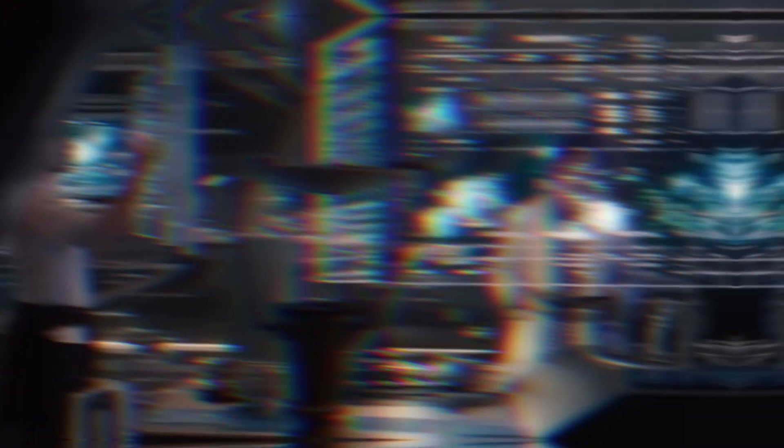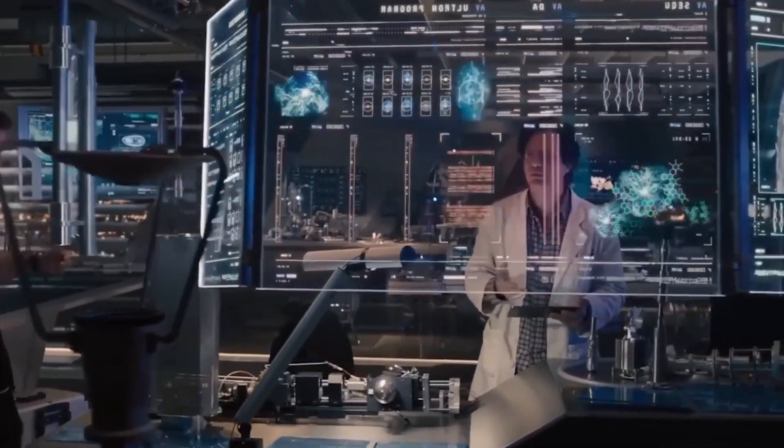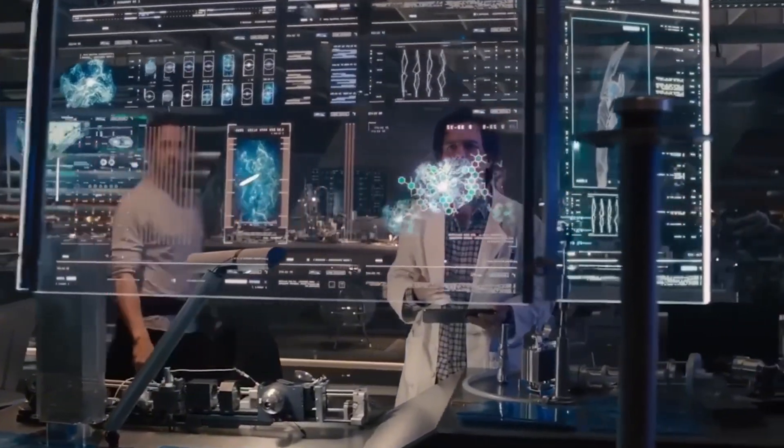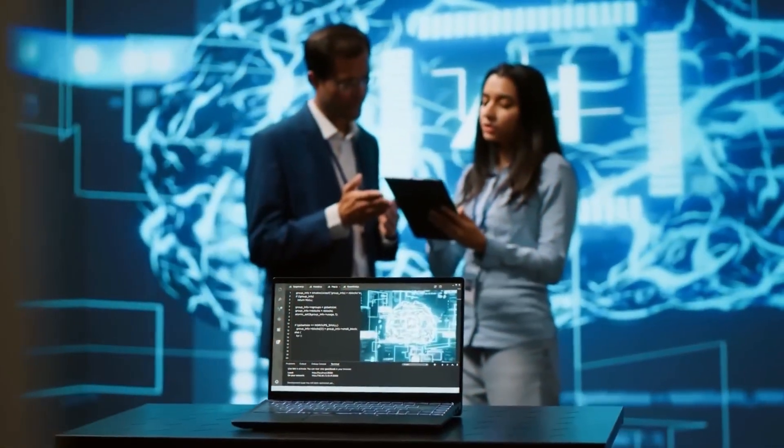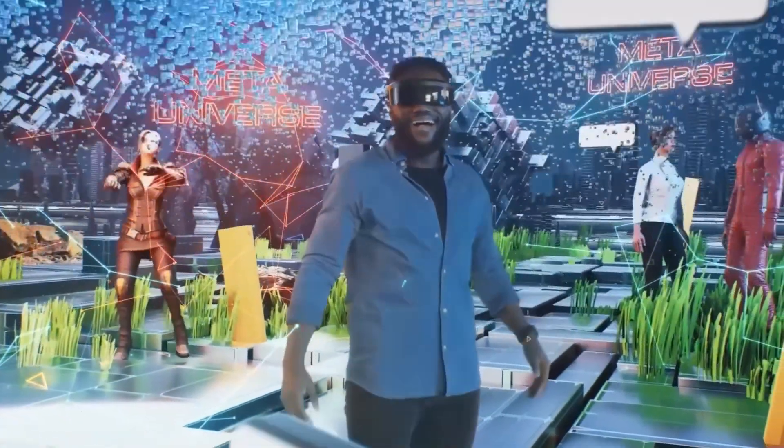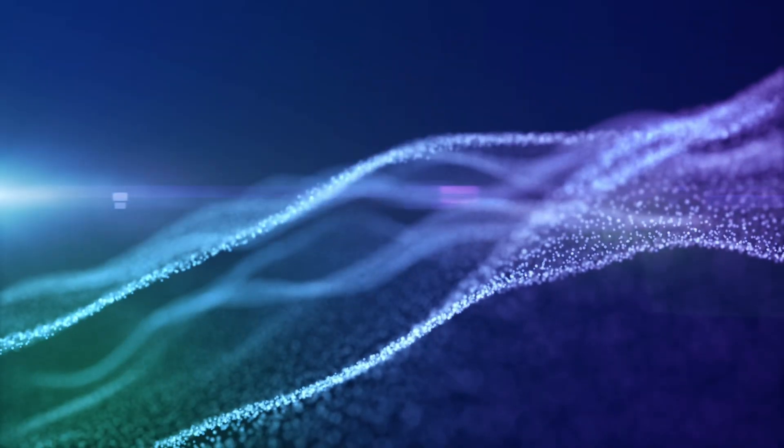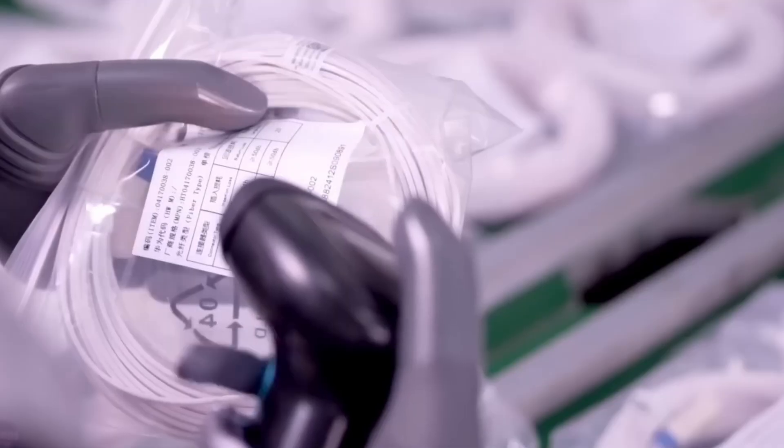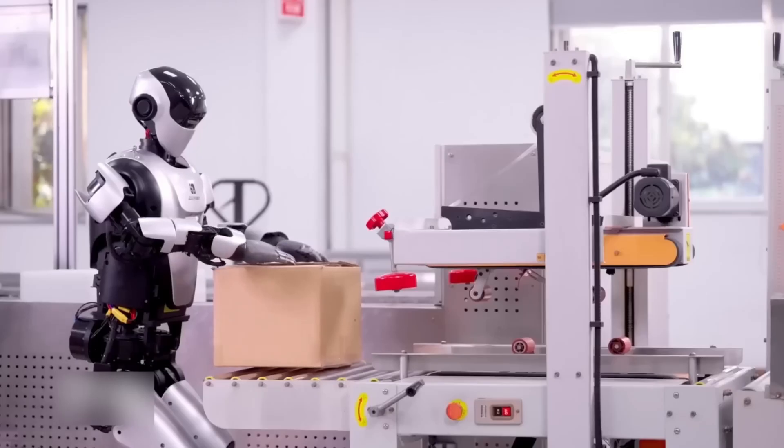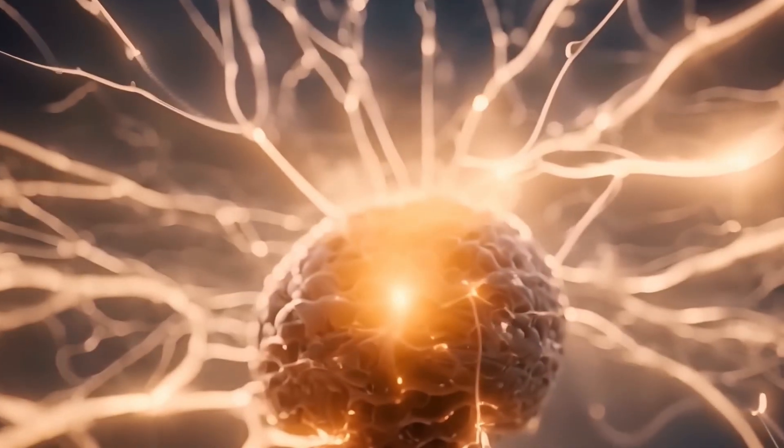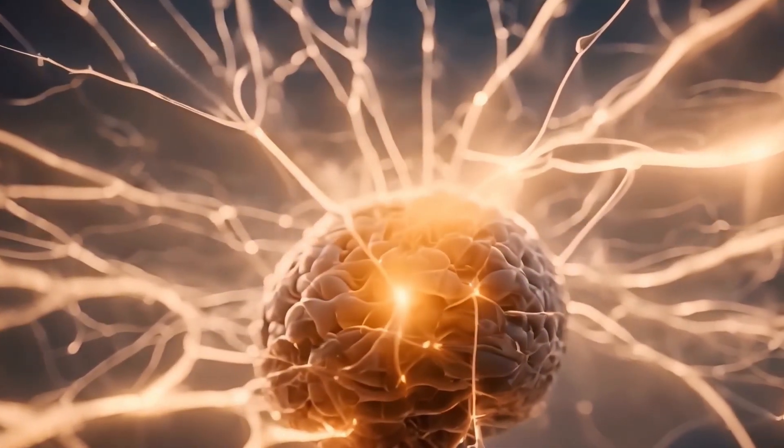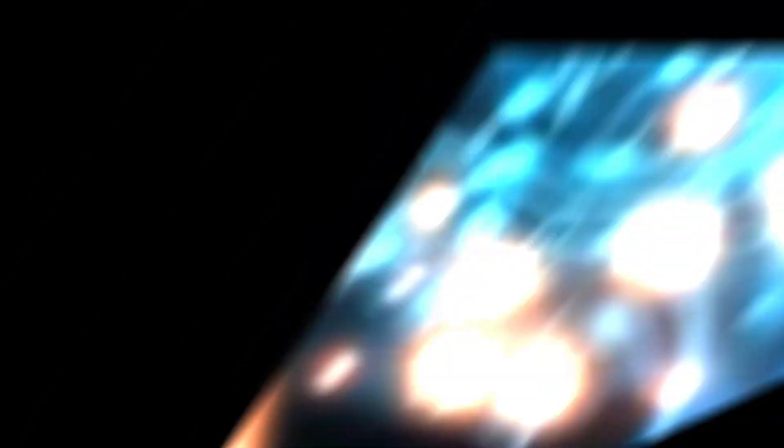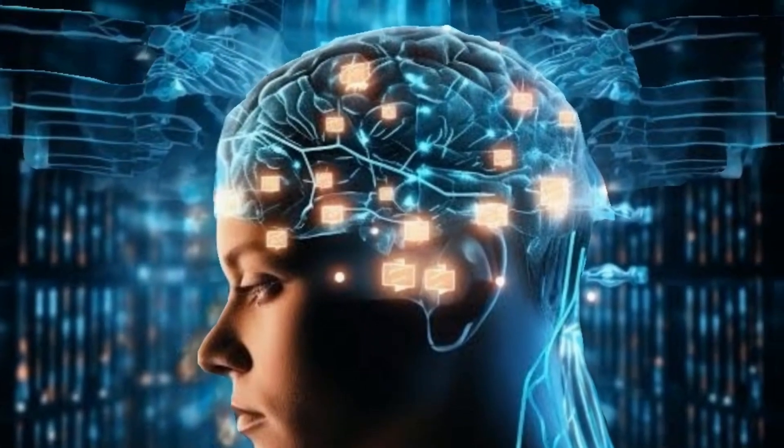But hold on. There's another twist to this story. While these breakthroughs in brain-on-a-chip tech are happening, other big players in the AI game aren't sitting still. Jeff Bezos and SoftBank, for instance, have thrown a whopping $300 million towards a startup called Skilled AI. But these folks? They're taking a different route. They're not going for lab-grown human brains and robots. Nah. They're aiming to build a full-on artificial brain from the ground up.